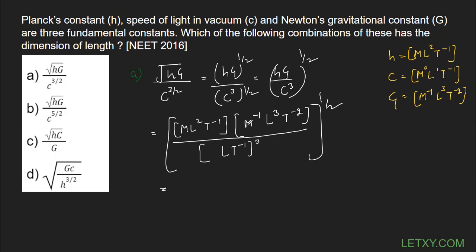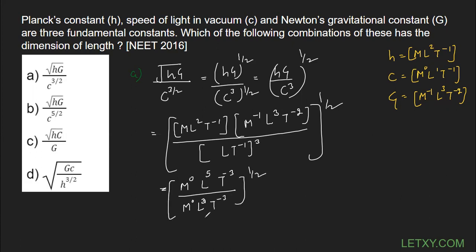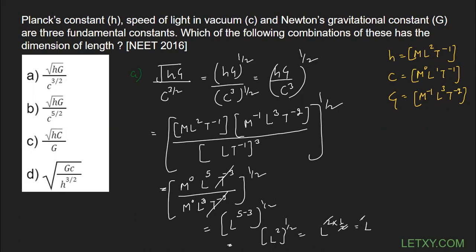In the numerator: M¹ and M⁻¹ cancel out giving M⁰. L² and L³ add to give L⁵. T⁻¹ and T⁻² add to give T⁻³. In the denominator: M⁰, L¹ becomes L³ due to the cube, and T⁻¹ cubed gives T⁻³. The T⁻³ terms cancel, leaving L⁵ divided by L³, which gives L². Raising to the power of one-half gives L¹.